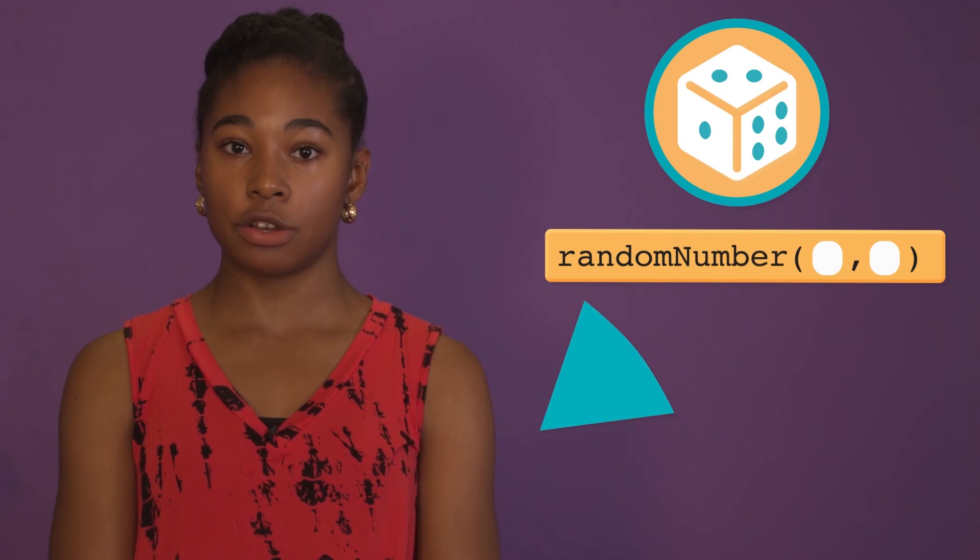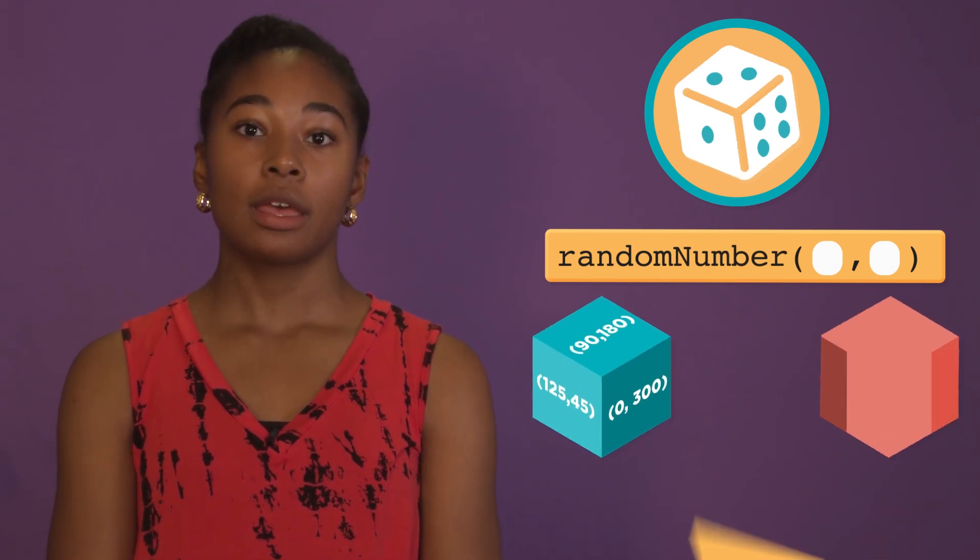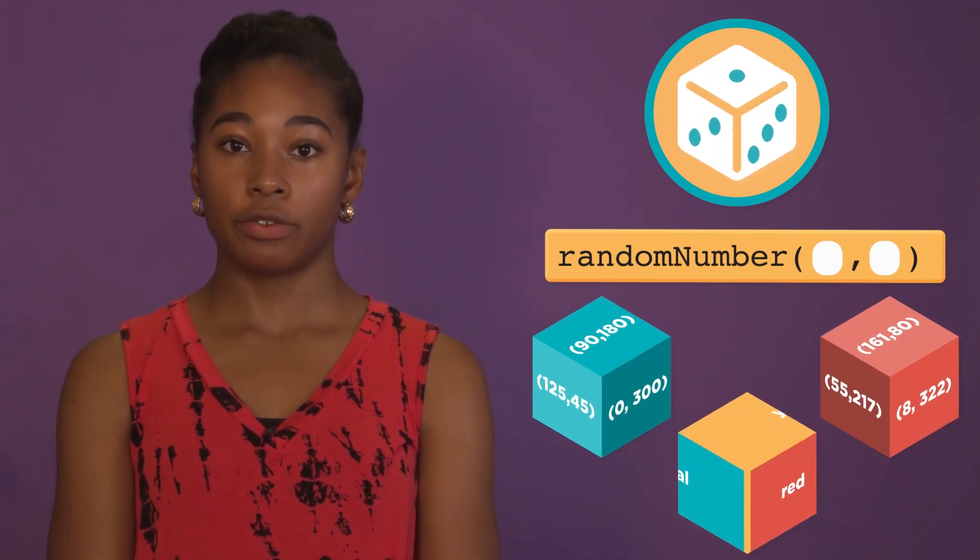An easy way to achieve a change is to use the random number command to generate a new random location, size, or color for the shape we're drawing.